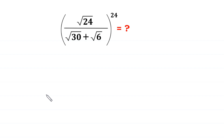Hello, welcome to how to solve this very nice square root algebra simplification problem. Square root of 24 divided by square root of 30 plus square root of 6, whole to the power 24.